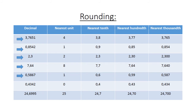The decimal 0,5867: rounded to the nearest unit is 1, the nearest 10 is 0,6, the nearest 100 is 0,59, and the nearest 1000 is 0,587. For 0,4342: the nearest unit is 0, because 43 is less than 50 so we round down. The nearest 10 is 0,4, the nearest 100 is 0,43, and the nearest 1000 is 0,434.